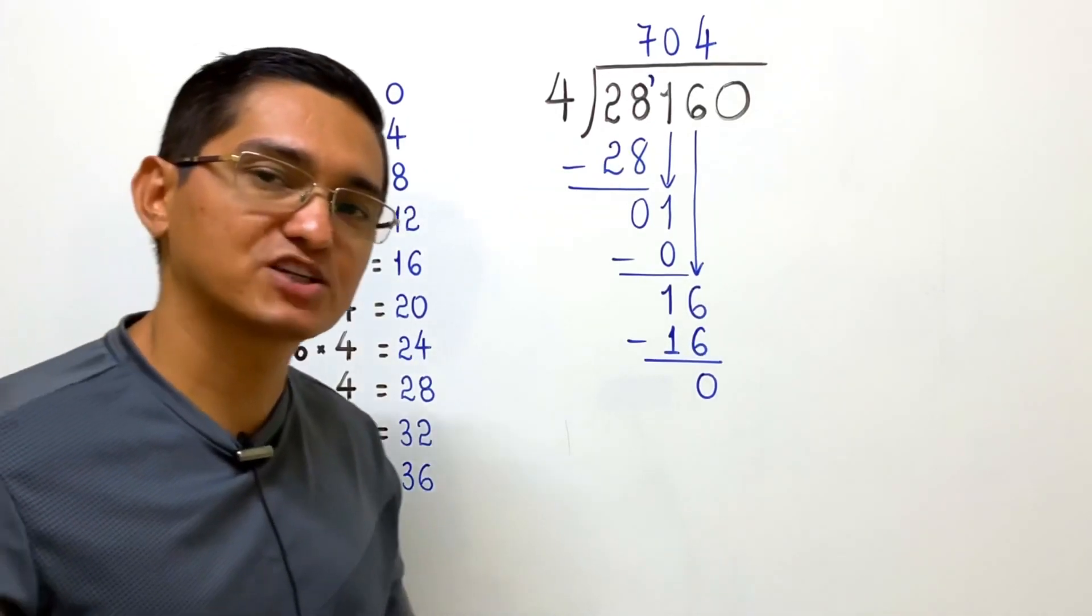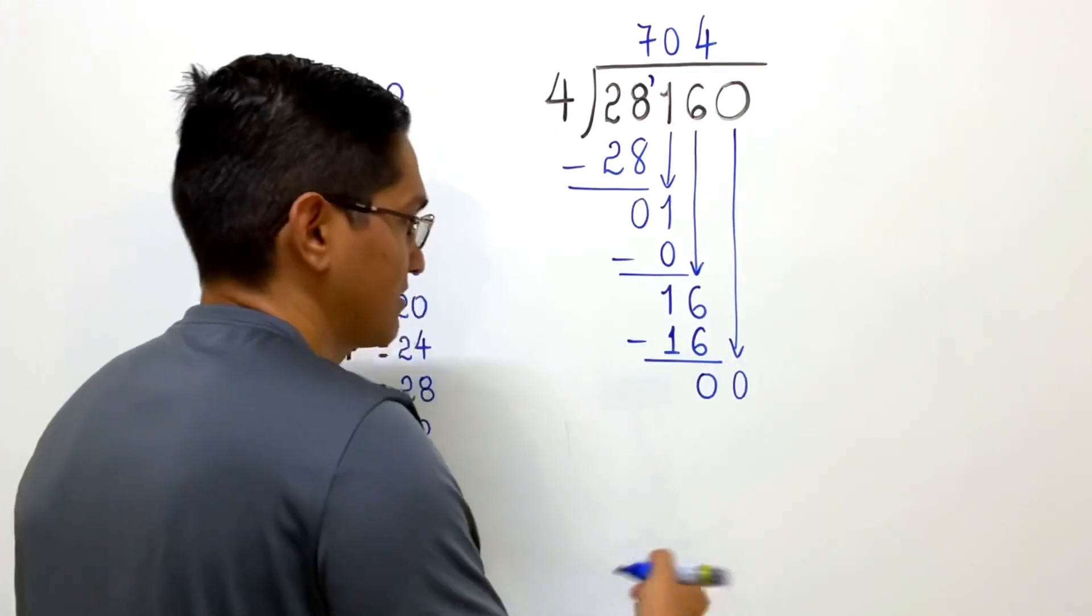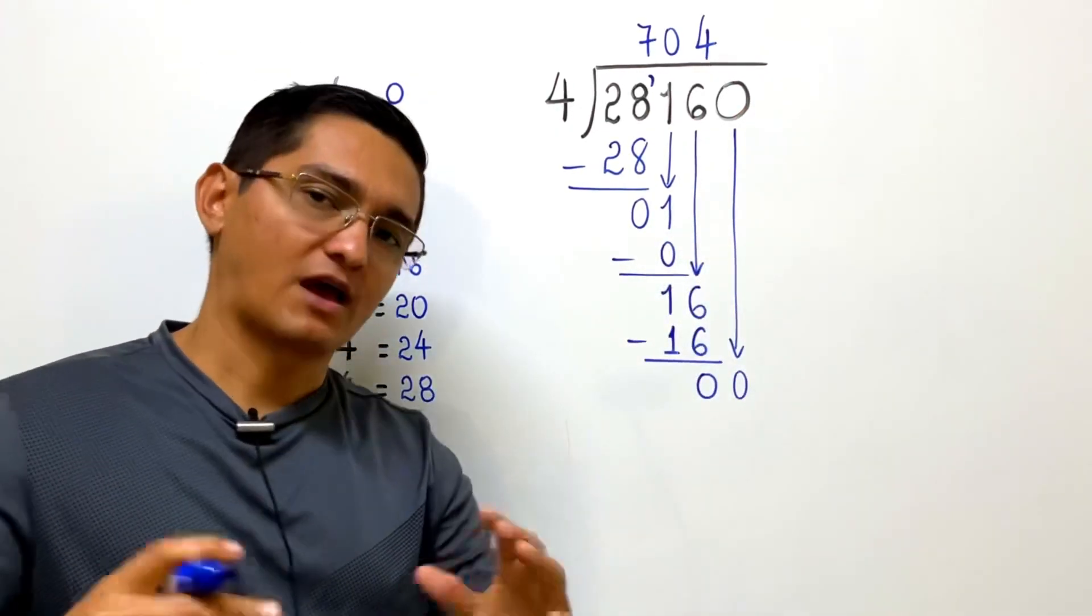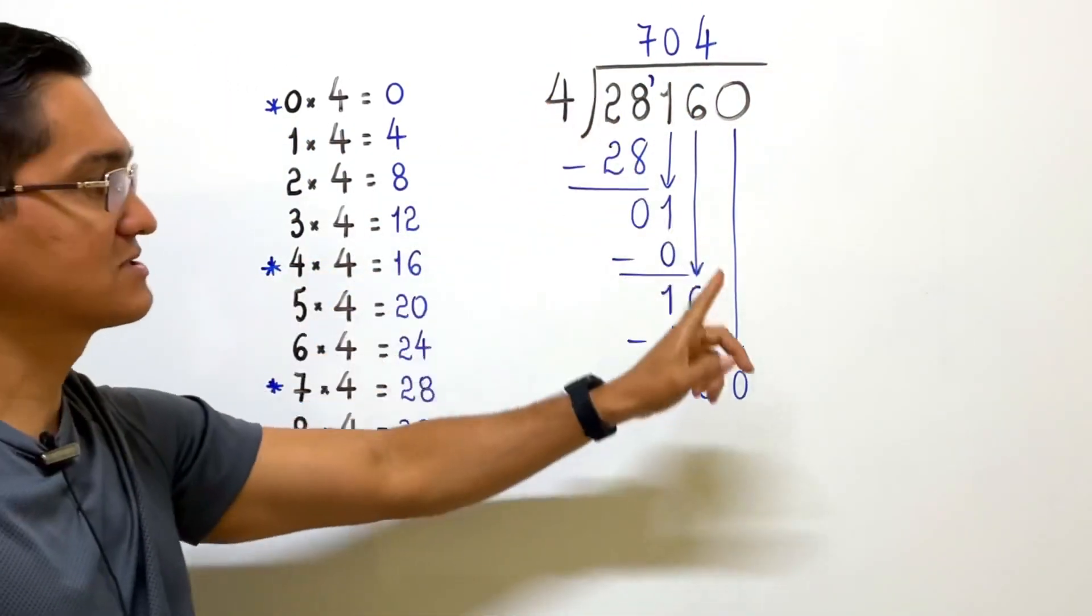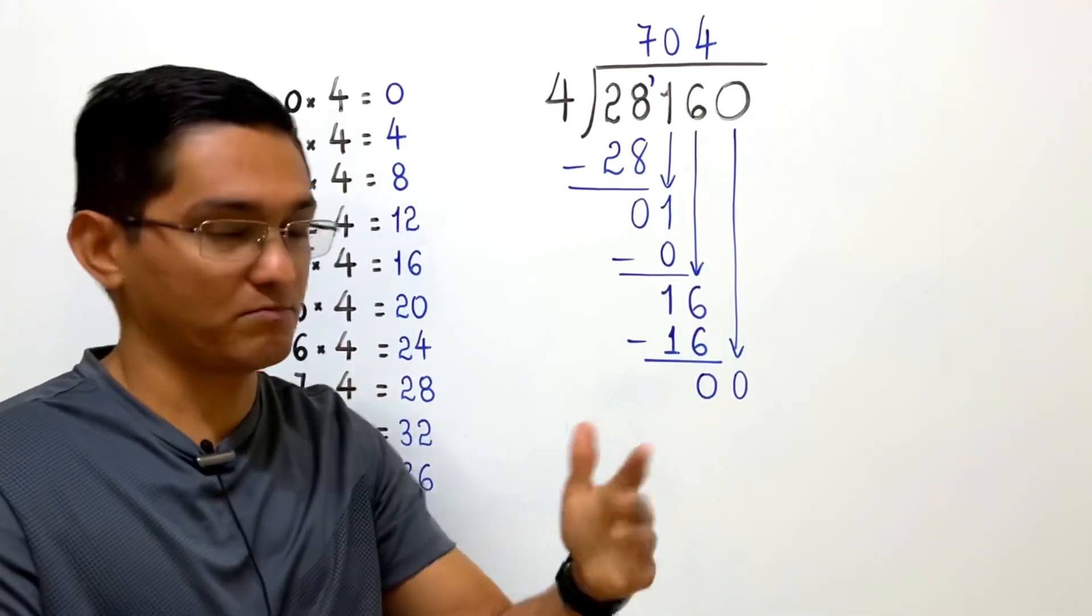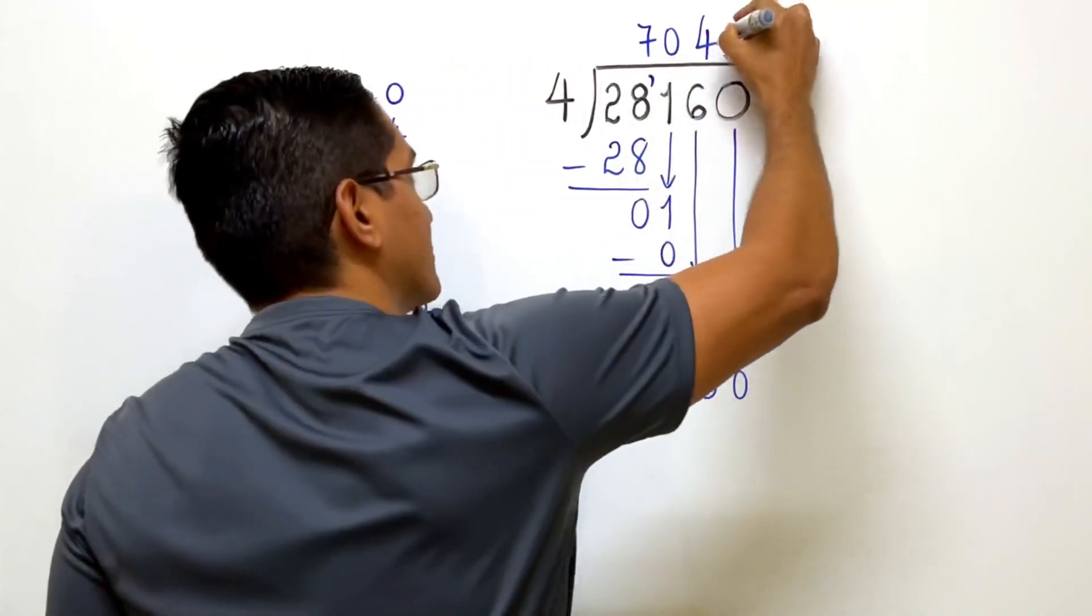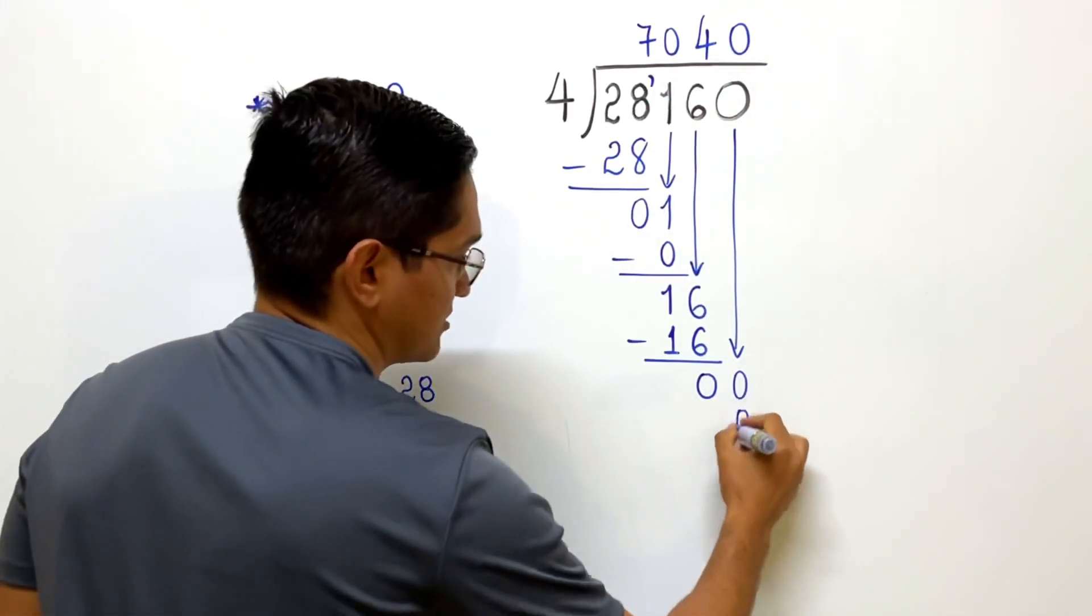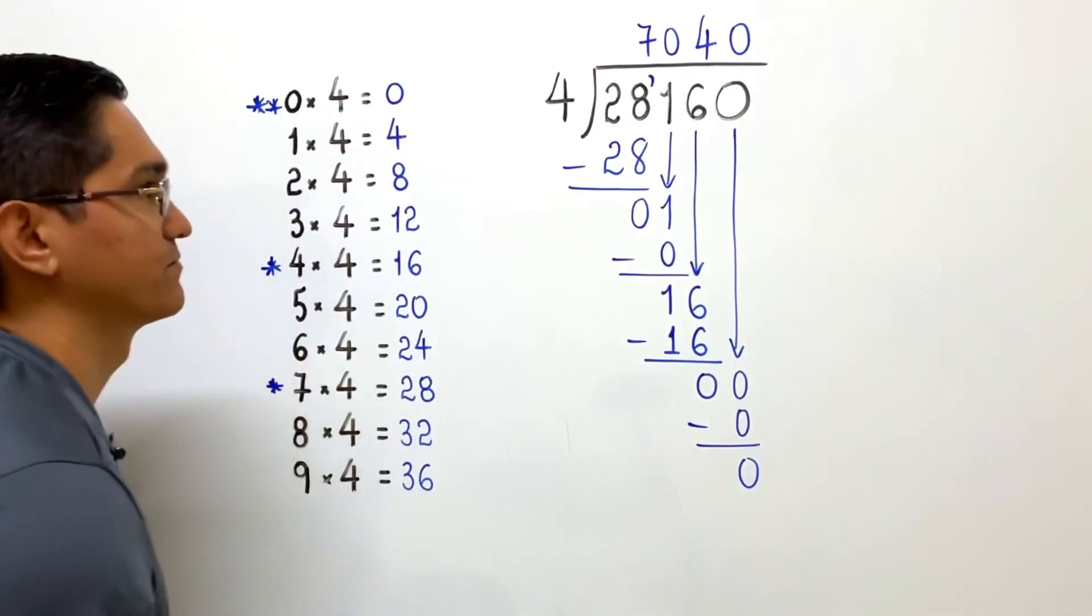After a subtraction, we bring down the next digit, bringing down 0 now. Now we have 0 here. Whenever we bring down a digit, we have to ask the question, what number do I multiply by 4 to get 0 or almost 0, but not more than 0? Of course, you know it's 0. I write 0 here. You can see that 0 times 4 is 0. So I write 0 here. 0 minus 0 is 0.